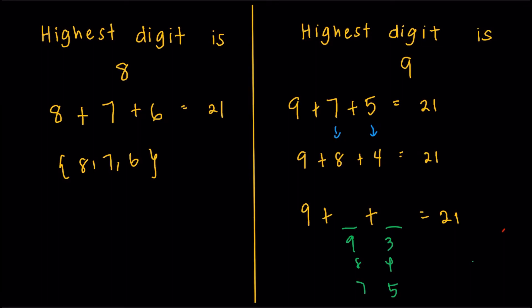So for the eighth case, we have one possible triple, 8, 7, 6. And then for the second case, we have two possible triples, 9, 7, 5 and then 9, 8, 4.